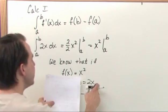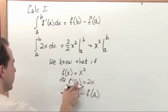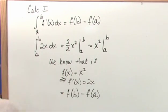Then you would always know that if you integrate 2x, which is the derivative, if you integrate this, you're always going to get x squared back. And then you could always do the limits of integration.